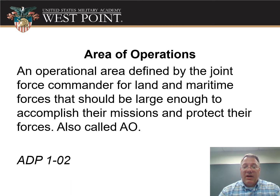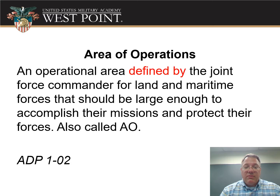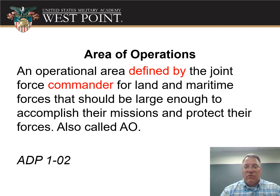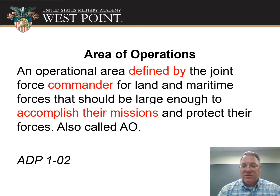First let's talk about the area of operations. Here's our doctrinal definition of what the AO is. What I want to highlight is that it gets defined by the commander — that's who decides where the area of operations is. So for a platoon leader, your company commander gives you your AO. It's all bounded by the control features he gives you — your unit sector. The key part is it's got to be an area where you accomplish your mission. We're going to stay inside those boundary lines. That's what the AO is.